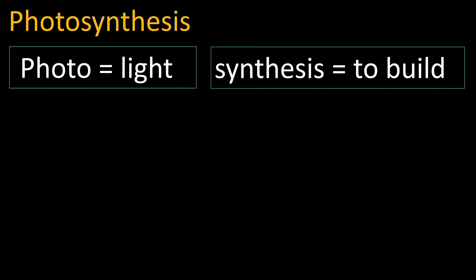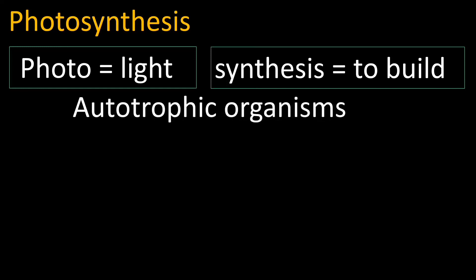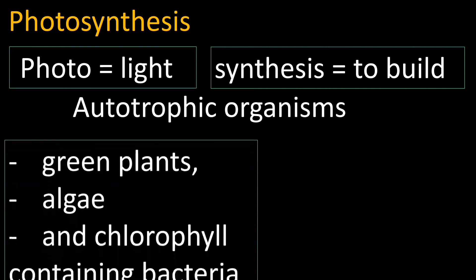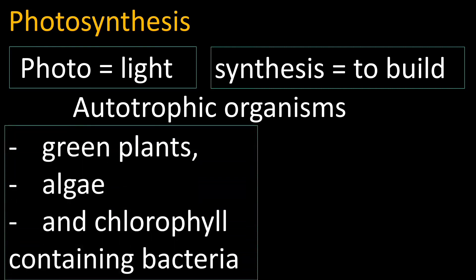All organisms do not involve in photosynthesis. Only the autotrophic organisms involve in photosynthesis. Organisms which prepare their own food are called autotrophic organisms. Examples include green plants, algae, and chlorophyll-containing bacteria.